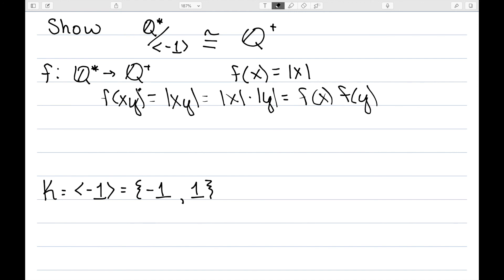In addition, the kernel of this homomorphism will be {-1, 1}. The only things that are going to map onto 1 are negative 1 or 1. And so my fundamental homomorphism theorem now says that Q star mod the kernel will be isomorphic to Q plus.